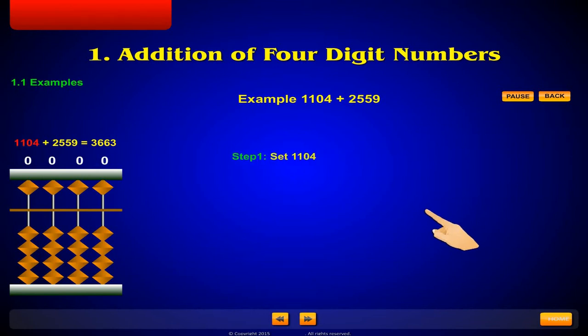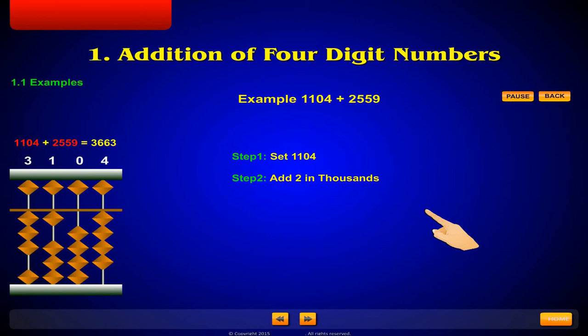Step 1: Set 1, 1, 0, 4. Step 2: Add 2 in thousands. Step 3: Add 5 in hundreds.